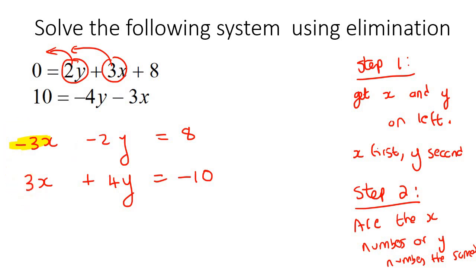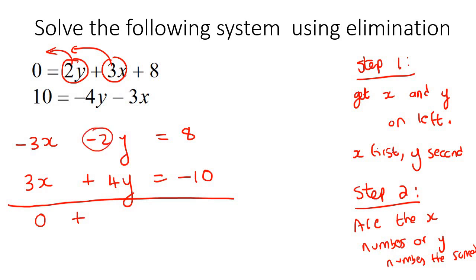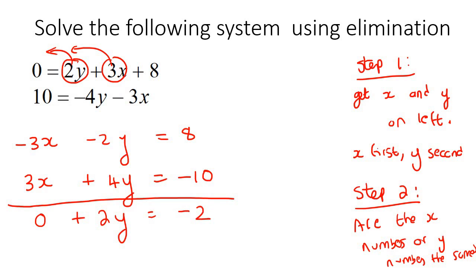What we're going to do now is either plus these two equations together or subtract them. What you want is for these x's to cancel each other out. If you add them, then minus 3 plus 3 gives you 0, which is amazing — that's what we want. Then minus 2 plus 4 gives you 2y's, and 8 plus minus 10 gives you minus 2. Sometimes we add, sometimes we subtract, but the goal is to cancel out the x's or the y's.